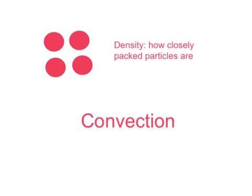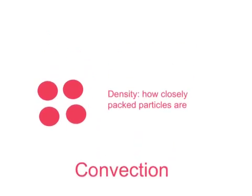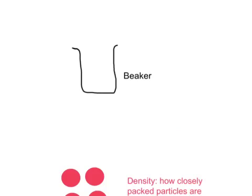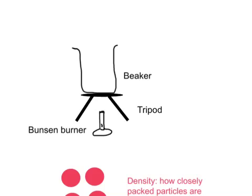So we did an experiment to find out how convection happens in terms of density. And in this experiment, what we did was, we took a beaker, which we put onto a tripod, and we set up a Bunsen burner. So we then filled the beaker with some cold water halfway up, and we dropped in a purple potassium permanganate crystal.